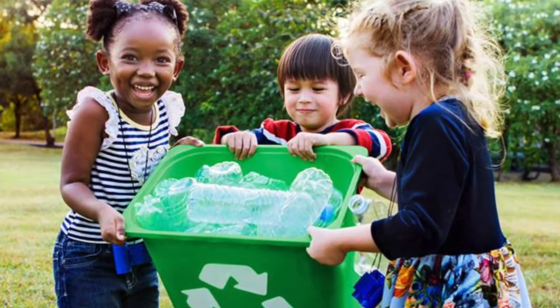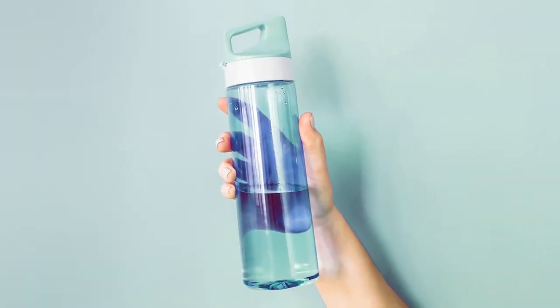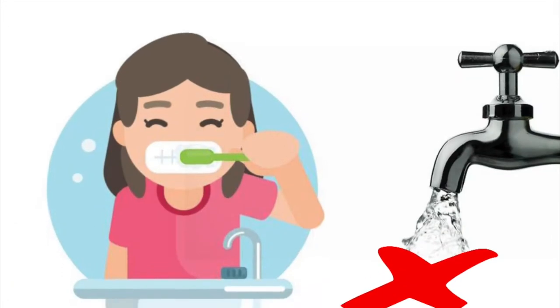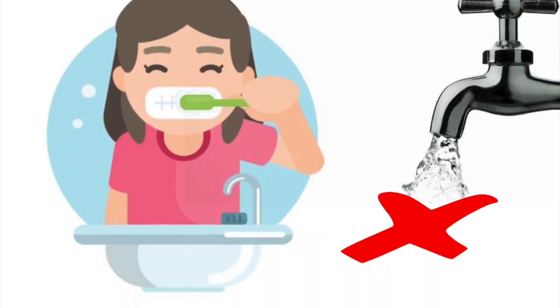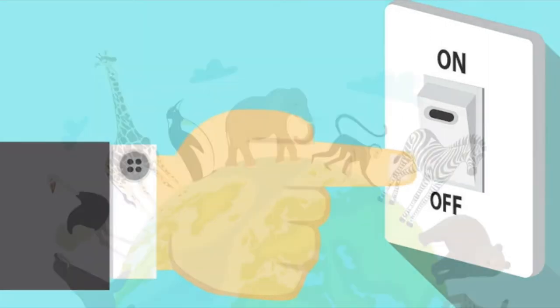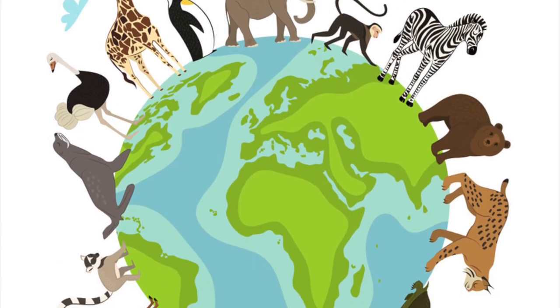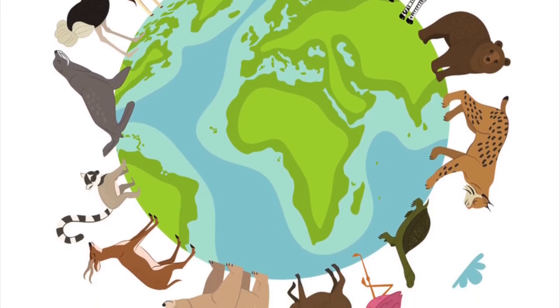Maybe you recycle your plastic water bottles, or maybe you drink out of a reusable bottle. Maybe you turn the water off while you're brushing your teeth, or maybe you turn the lights off when you're not using them. These are all great ways to help save energy and keep nature clean, both for ourselves and the animals that live in it.